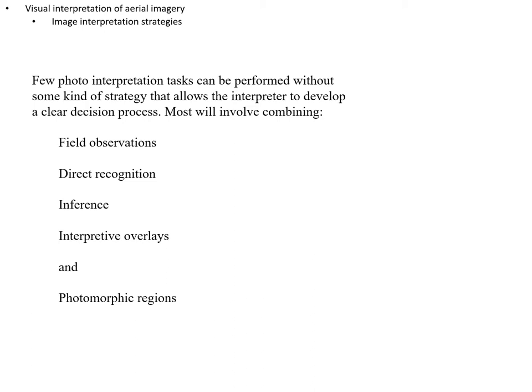Most photo interpretation tasks will involve one or more of the following: field observations, direct recognition — where you can just see what you're looking at and it's pretty obvious — inference, where you look at an object and figure out from its context what it is, interpretive overlays, and finally photomorphic regions.